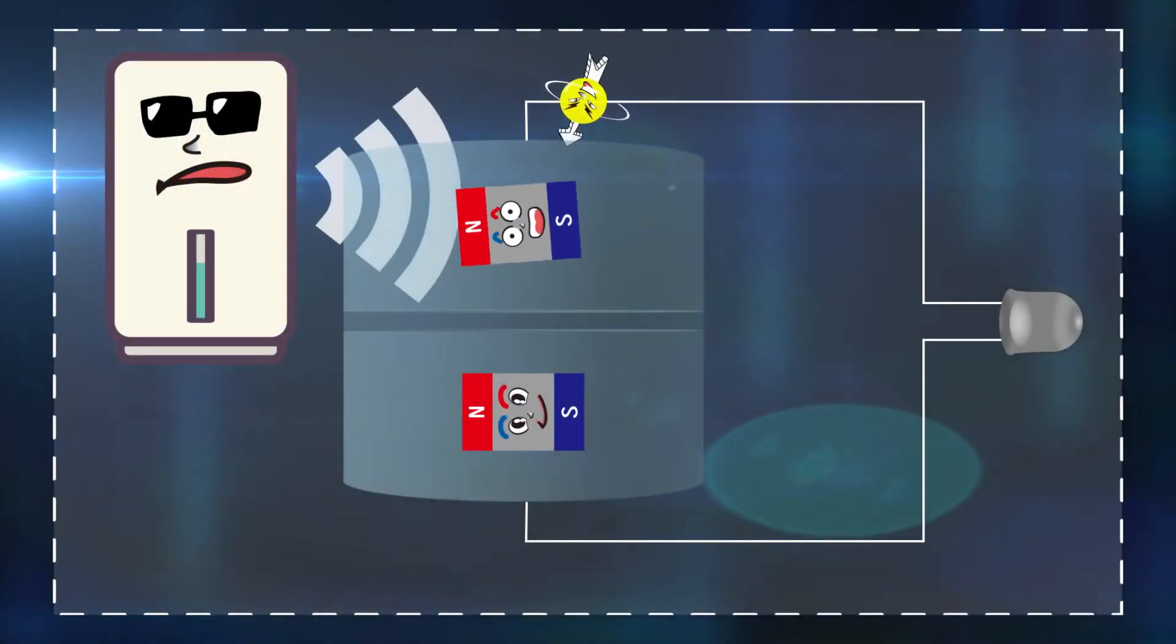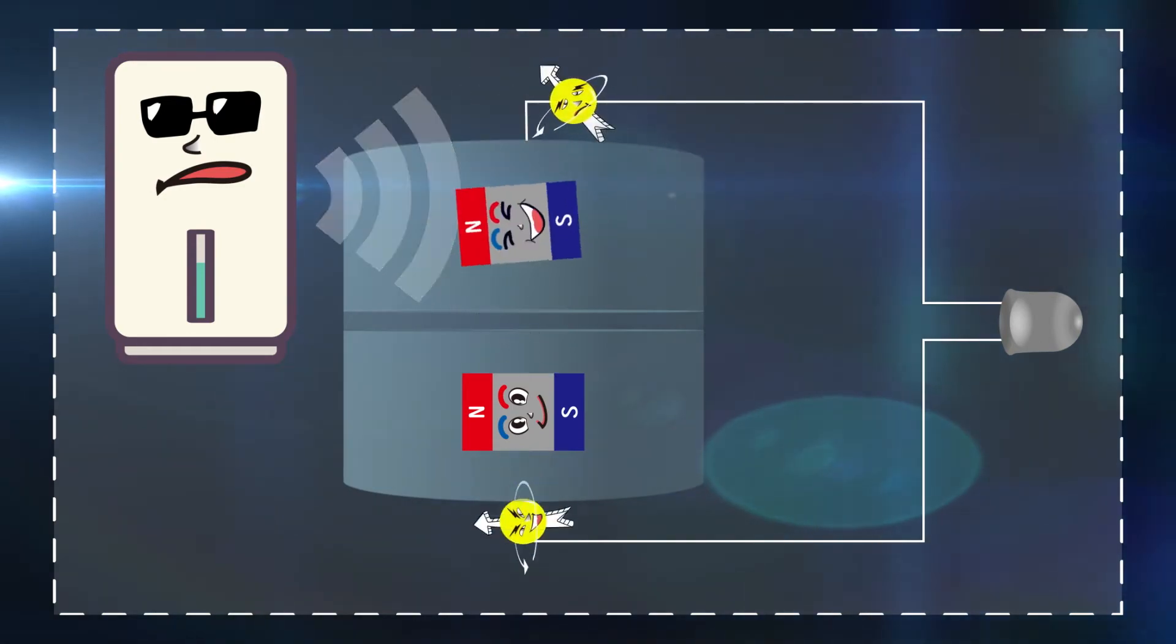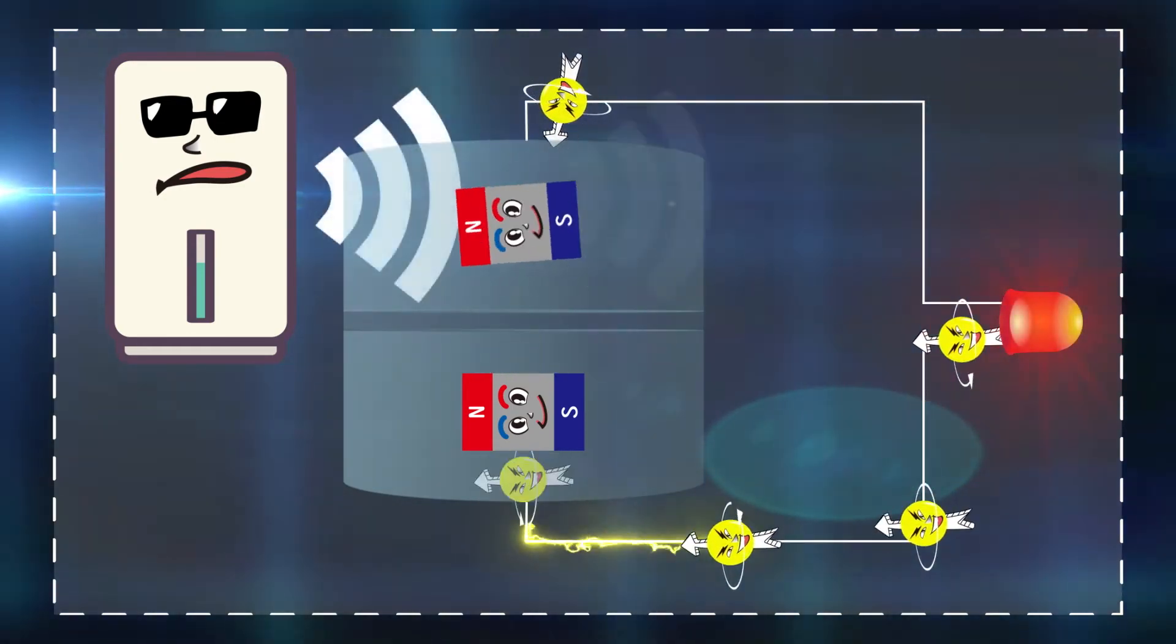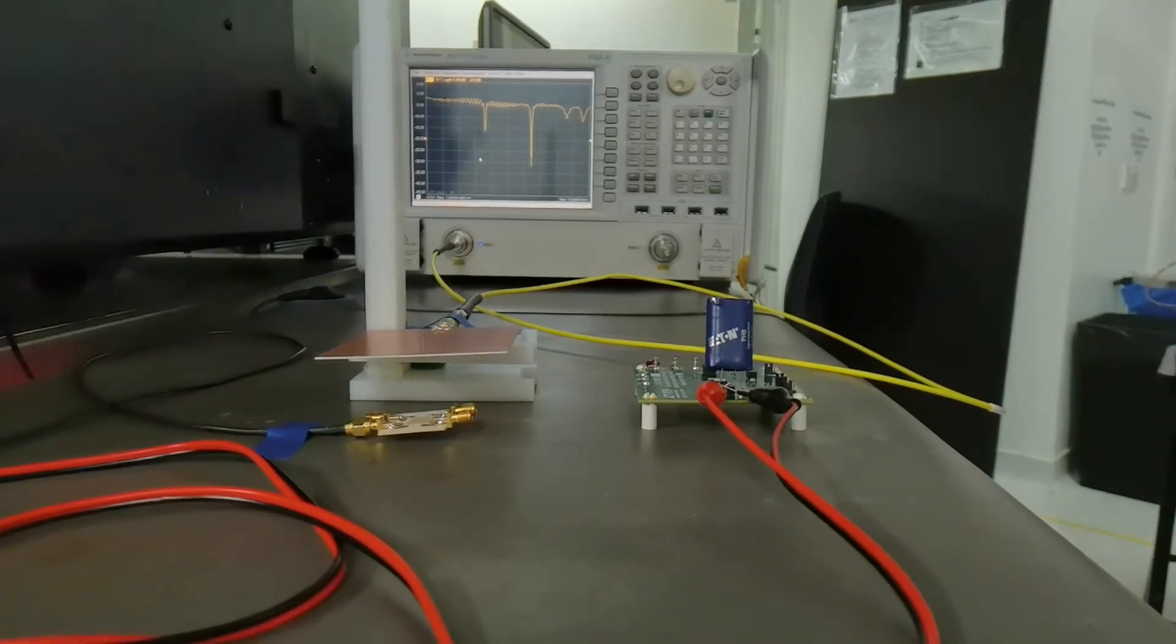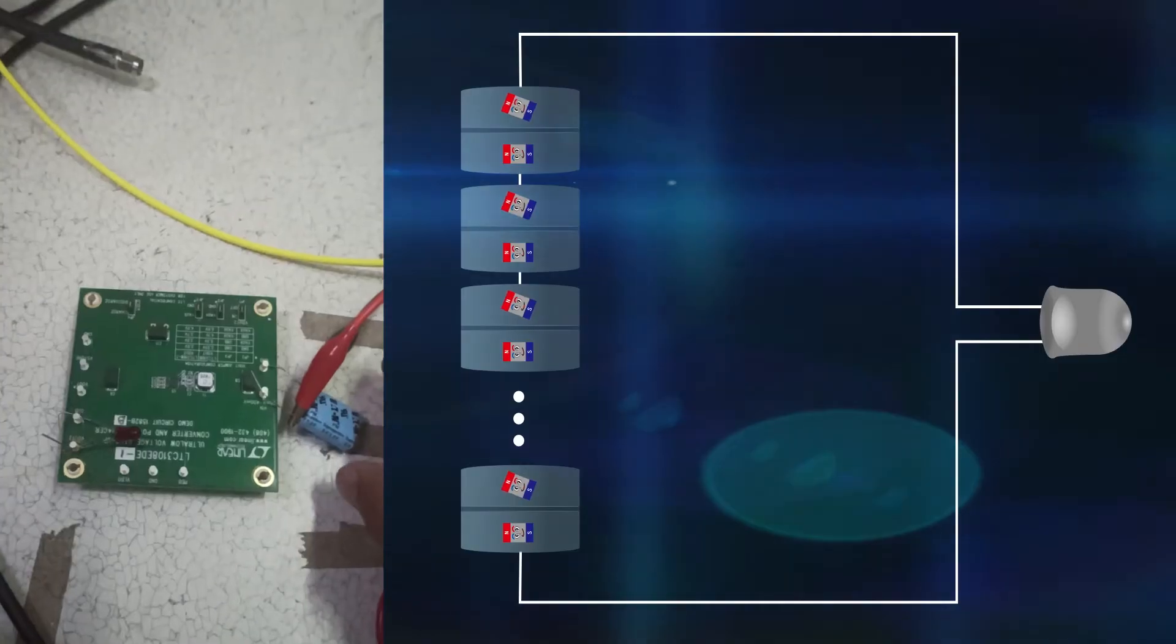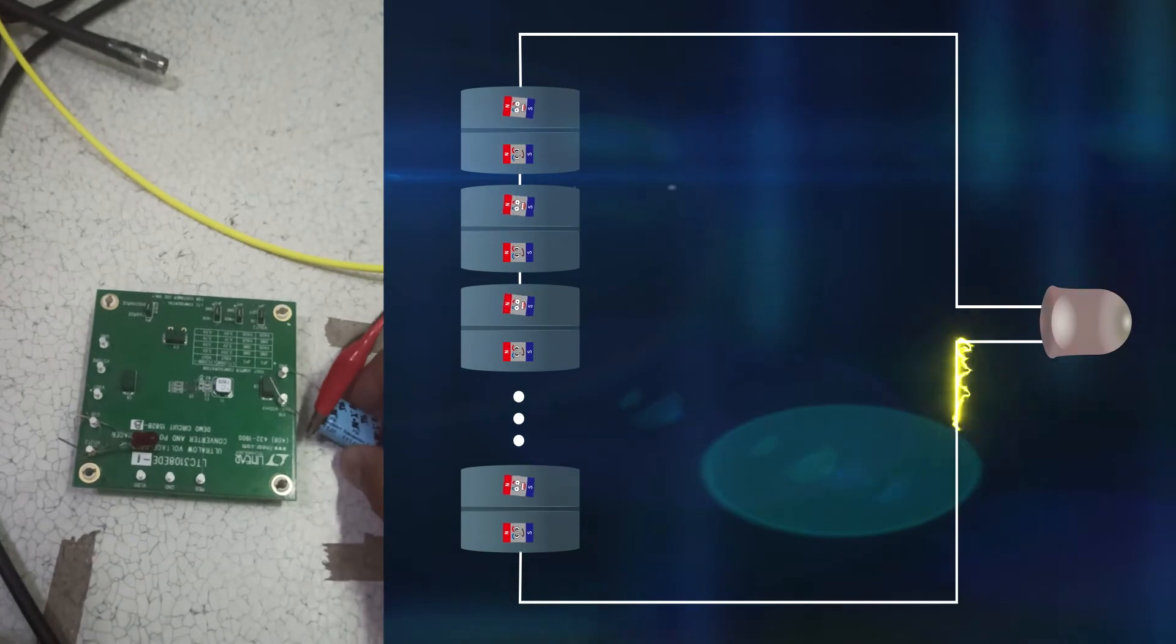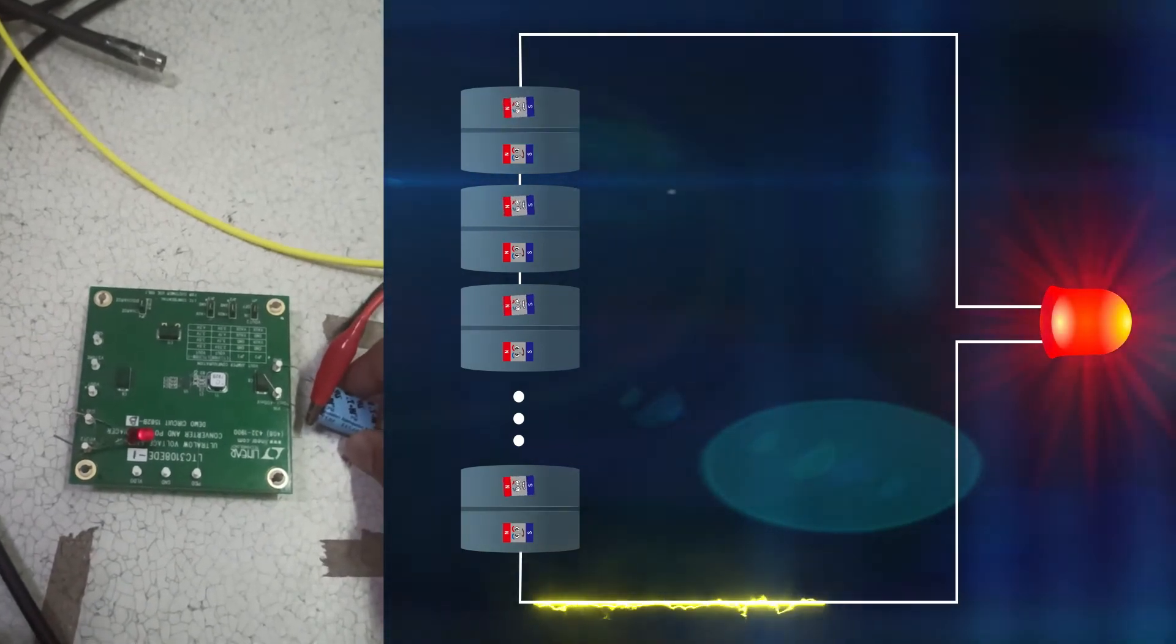The magnetic devices are designed so that Wi-Fi band electromagnetic waves cause the magnetization to oscillate, leading to electrical power generation. We demonstrated that an array of these magnetic devices connected in series can harvest enough energy from Wi-Fi band signals to power an LED.